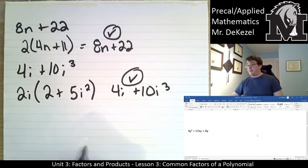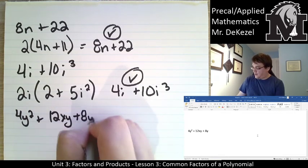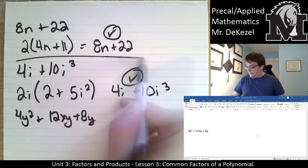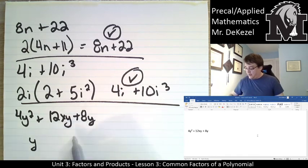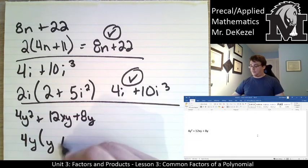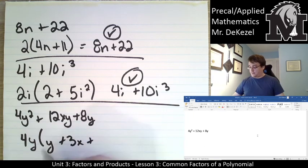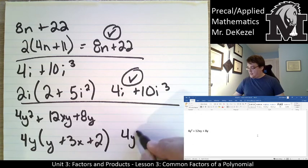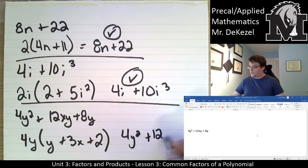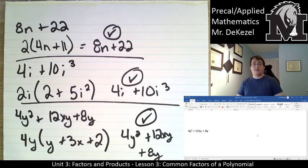Last example: 4y squared plus 12xy plus 8y. Y is common to all three terms, and 4 is the greatest common factor of the numbers, so we factor out 4y. What times 4y gets 4y squared? Just y. What times 4y gets 12xy? That's 3x. What times 4y gets 8y? That's 2. So: 4y times (y plus 3x plus 2). Check: 4y times y is 4y squared, 4y times 3x is 12xy, and 4y times 2 is 8y. Our check proves we're correct.